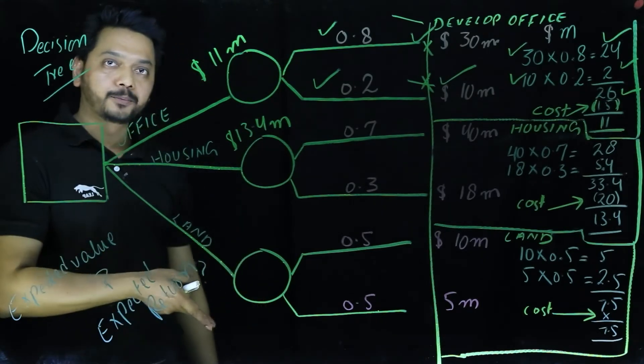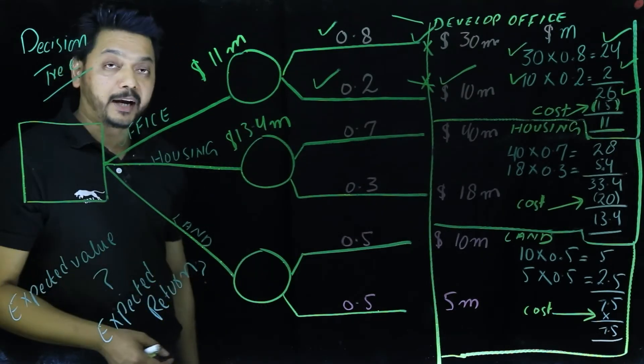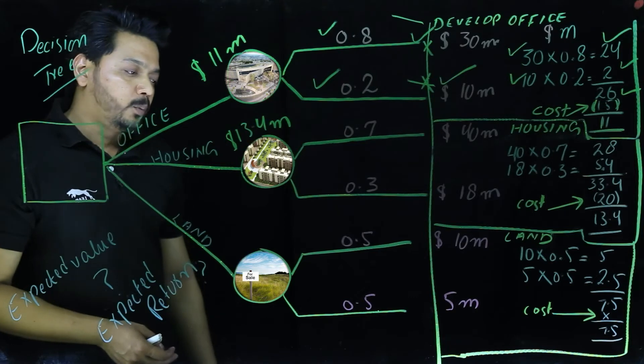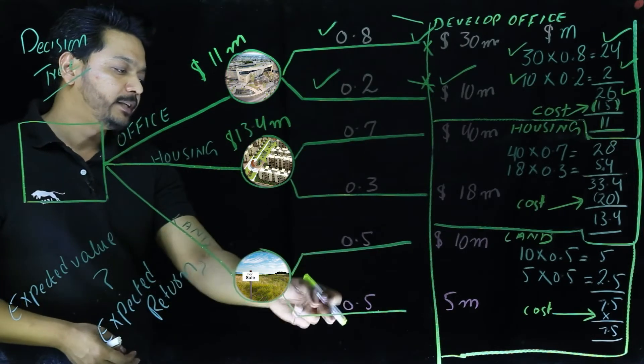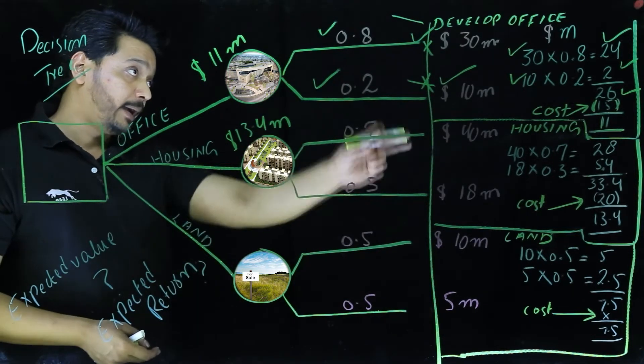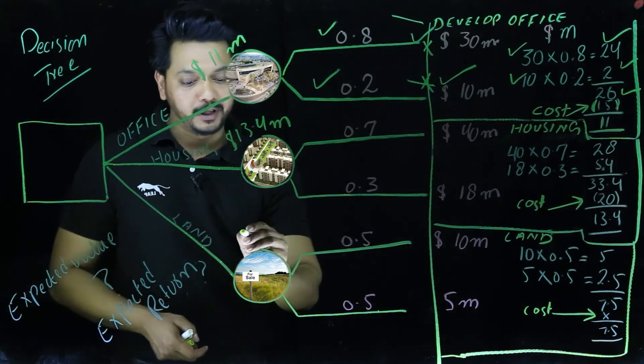Likewise, if we go towards a third option, which is they may decide to come up with the land, we will apply the same formula. Here the probability is the same 50-50%. We will apply the same method which will give us $7.5 million.